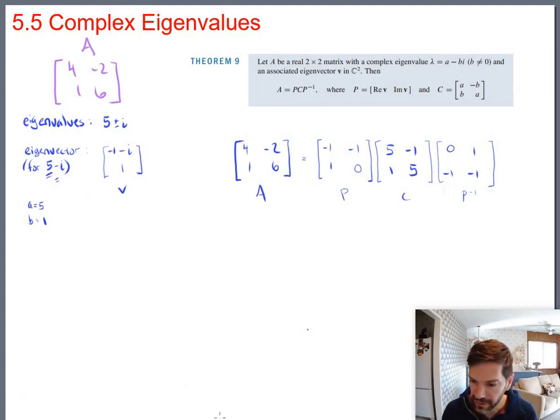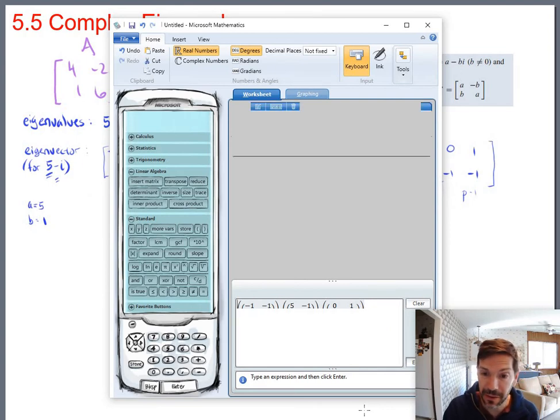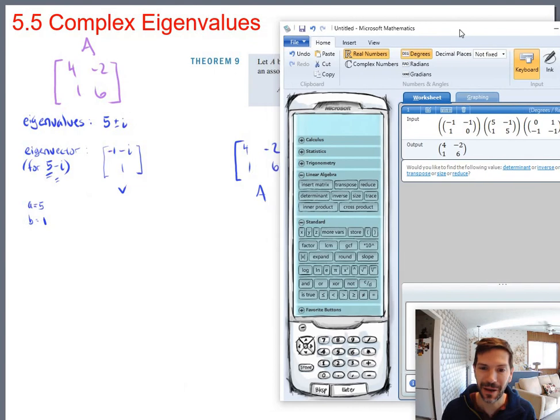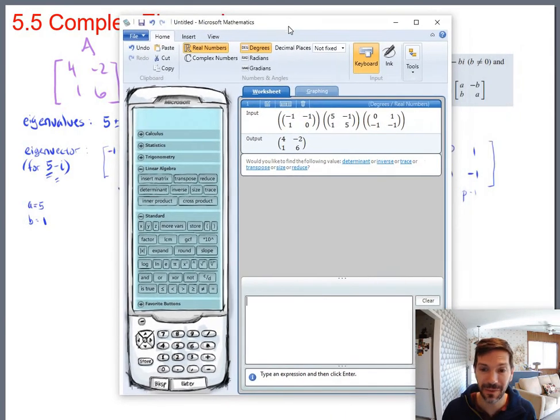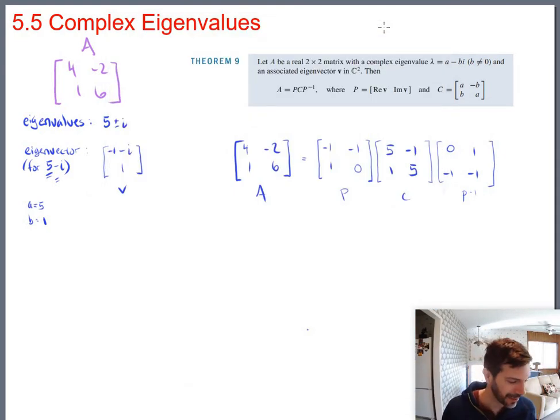Okay, so I'll carefully type this into a matrix calculator. Those three matrices. And let's just multiply them together to make sure that it really is a correct factoring for 4, negative 2, 1, 6. Which it is. Okay, so at least there's some verification that it works mechanically. But let's talk about why we would even care about this.